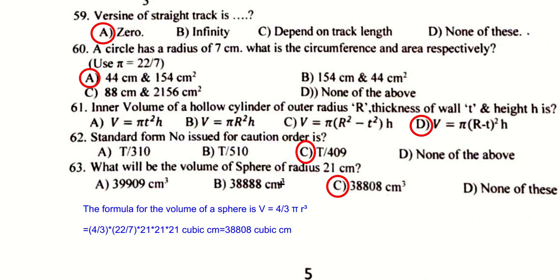A circle has a radius of 7 cm. Using circumference formula 2πr and area πr², the circumference is 44 cm and the area is 154 cm². For the inner volume of a hollow cylinder with outer radius R, wall thickness t, and height h: the inner radius is R − t, so the inner volume is π(R − t)² × h.